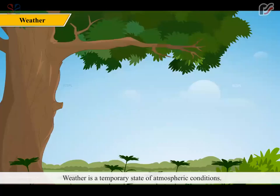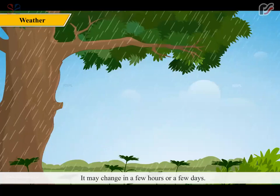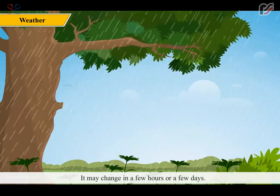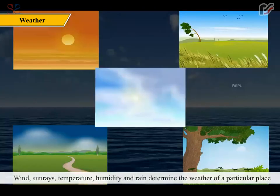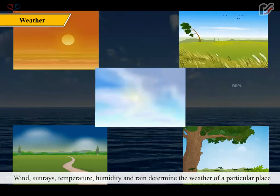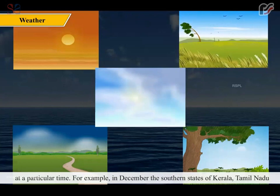Weather is a temporary state of atmospheric conditions. It may change in a few hours or a few days. Wind, sun rays, temperature, humidity and rain determine the weather of a particular place at a particular time.